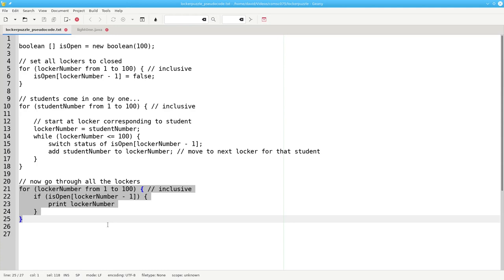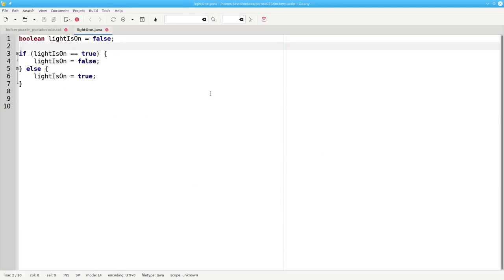The other question we have is, how do we switch a boolean variable representing our locker from open to closed and back again? Here's a similar example to give you some ideas. Let's say we have a boolean called lightIsOn that's either true for on or false for off. Here's one way that we can do it. We can say if lightIsOn equals true, then we'll set it to false. Otherwise, it must be false and we'll set it to true. This works, but it's not good coding practice.